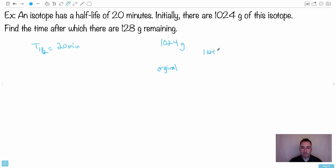If I take 1024 grams and I divide that by two, what do I end up with? Well, 1024 divided by two, it's 512 grams. That's after one half-life. If that makes any sense, that's after one half-life.